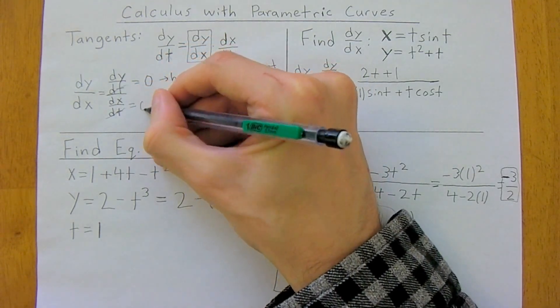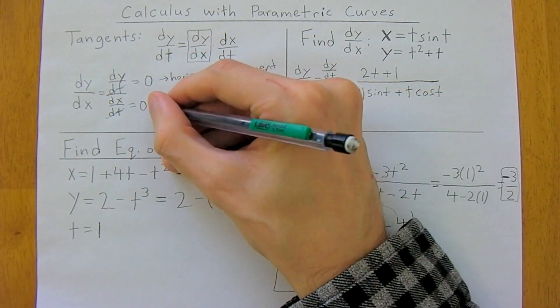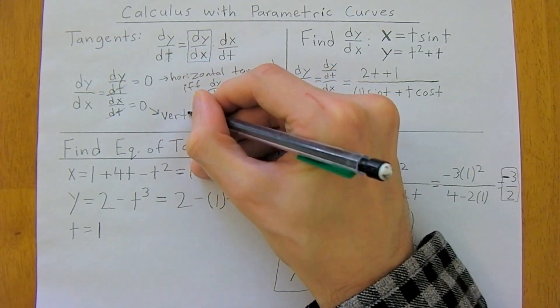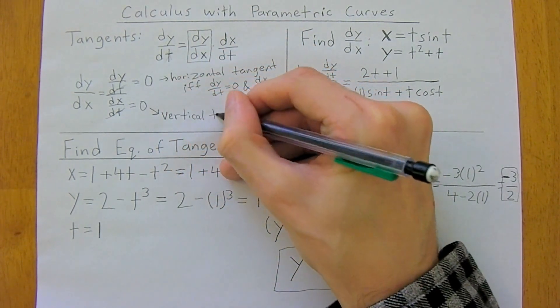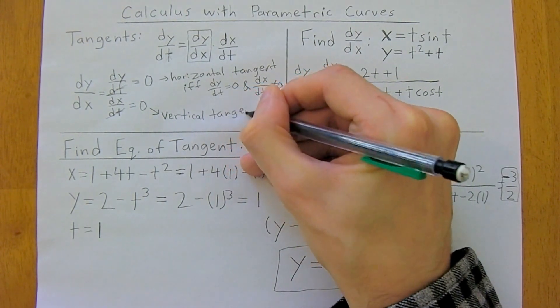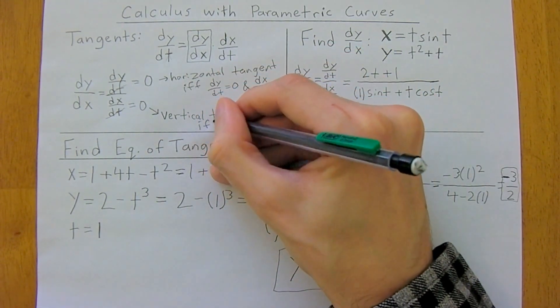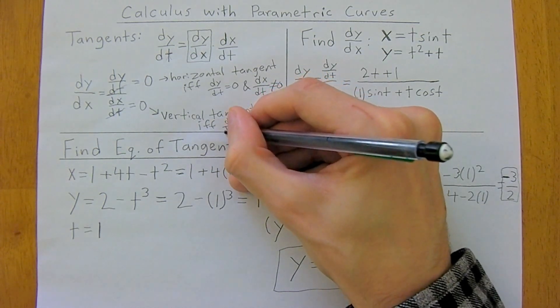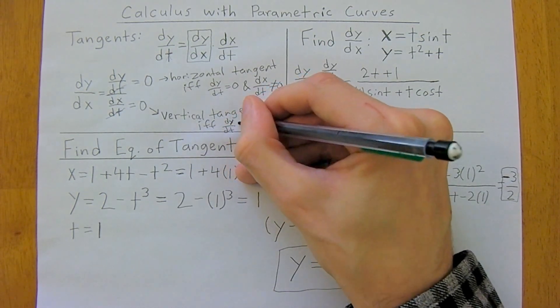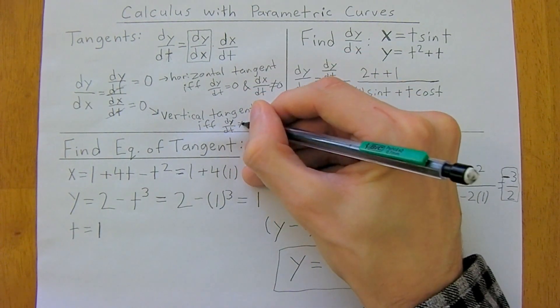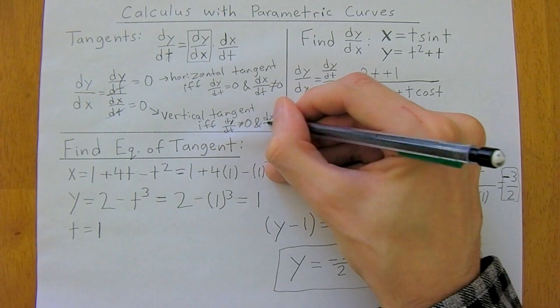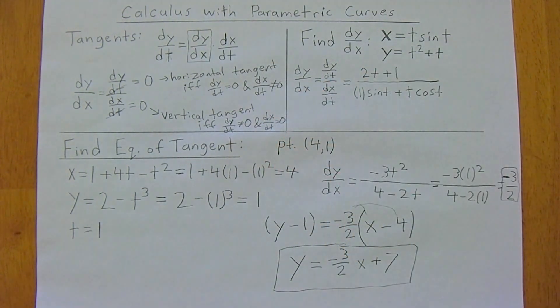And then similarly, if dx over dt is equal to 0, we're going to get a vertical tangent if, and only if, dy over dt is not equal to 0 and dx over dt is equal to 0.